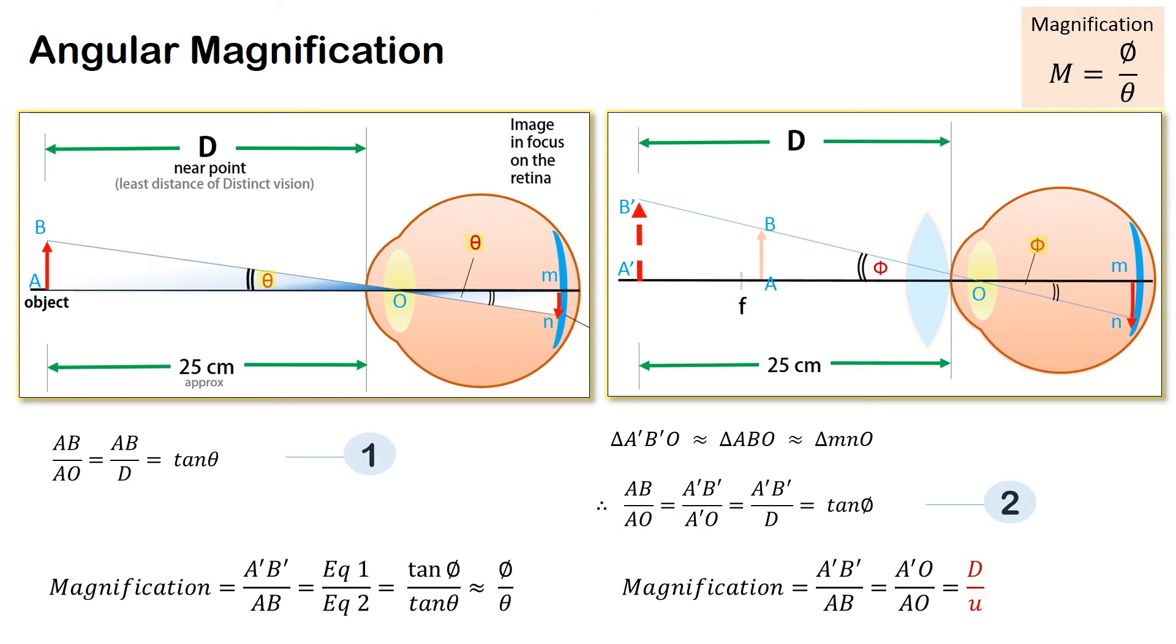Further we can say that magnification is a dot o by ao, which is the distance of distinct vision by u where the object is placed.